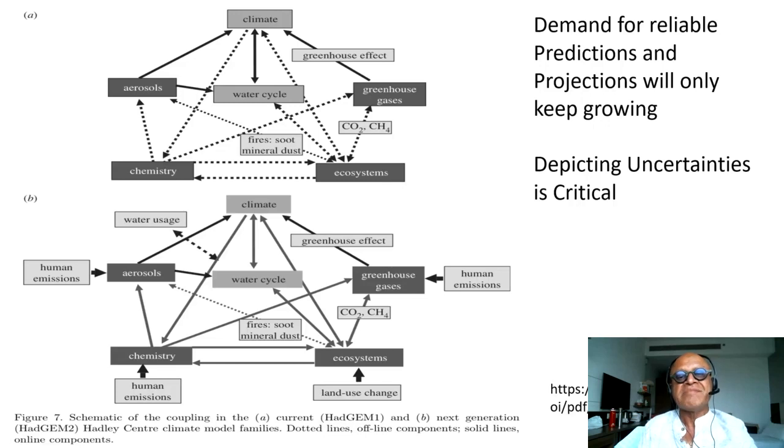Whereas in the climate and earth system models, it's not that easy, because El Niño happens every few years. Every model obviously faces this challenge every few years, and if they miss it, they have to figure out why they missed it. They get four years to several years to sit and hear that their model failed. But in the meantime, the demand for reliable predictions and projections will only keep growing, and this means depicting uncertainties is going to be critical.